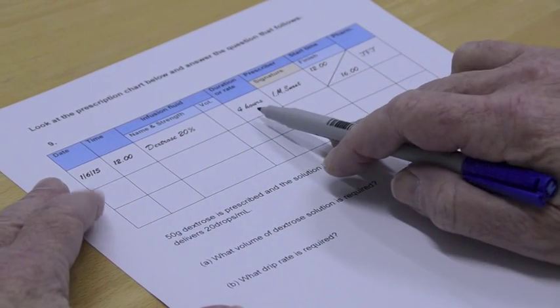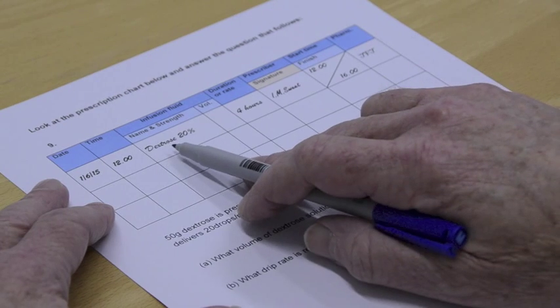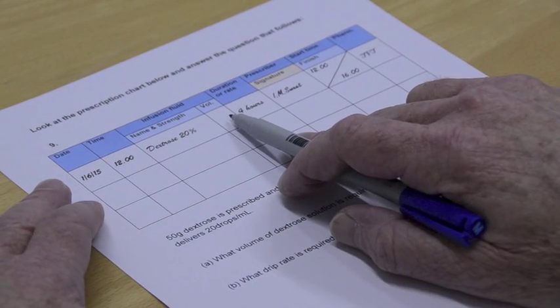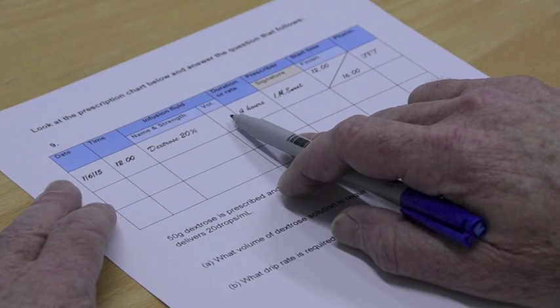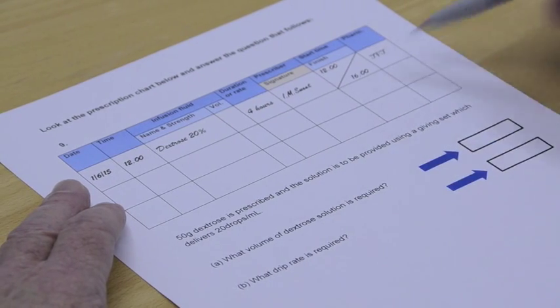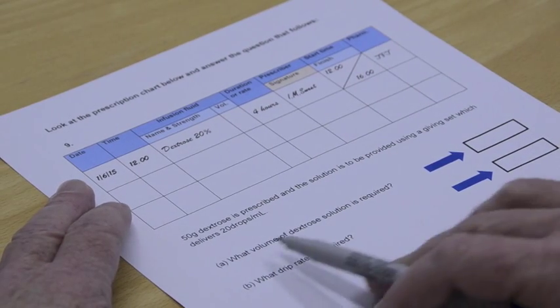We've got a duration rate of four hours and we've got dextrose 20% but we haven't got a volume so how do we know what on earth the volume is? We know how long it's got to go through there which is four hours. Let's have a look at the question.